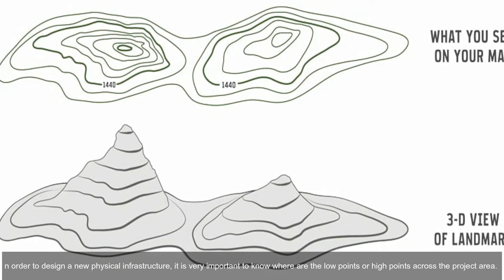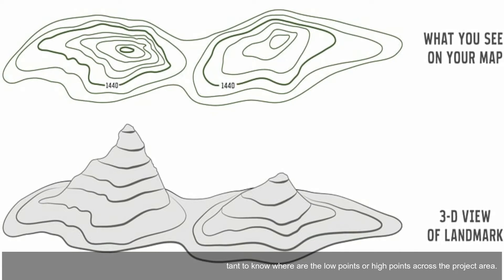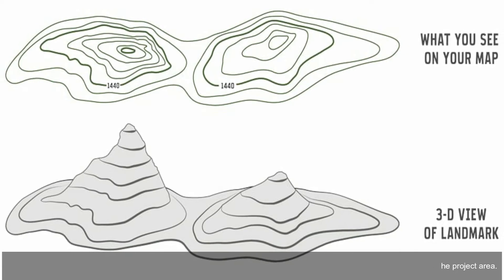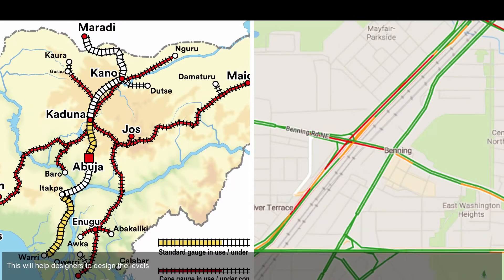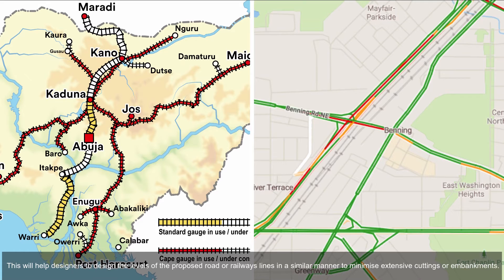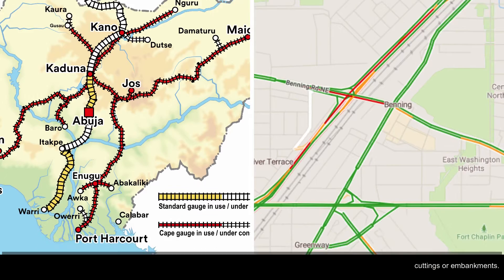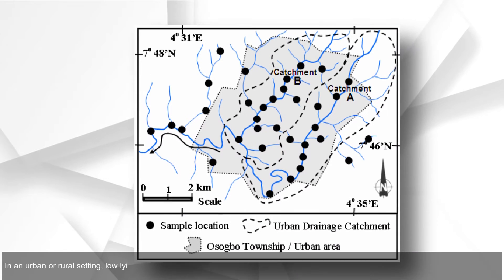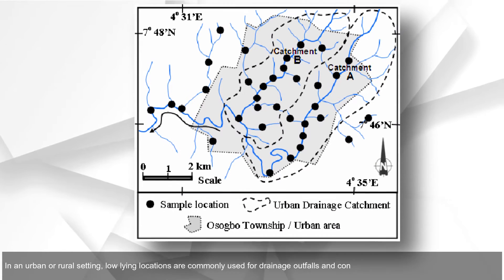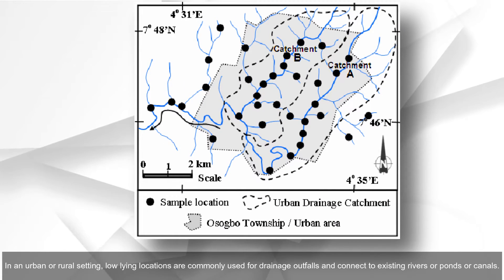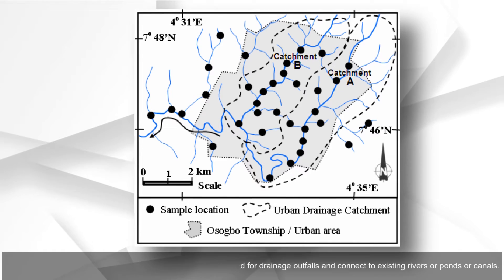In order to design new physical infrastructure, it is very important to know where the low points or high points are across the project area. This helps designers to design the levels of proposed roads or railway lines in a manner that minimizes extensive cuttings or embankments in urban or rural settings.